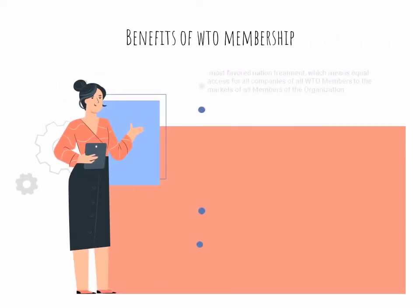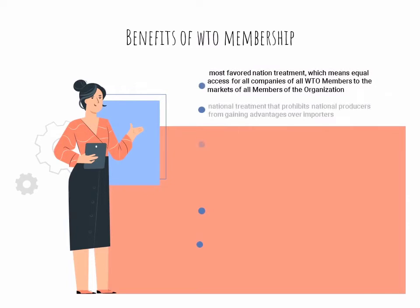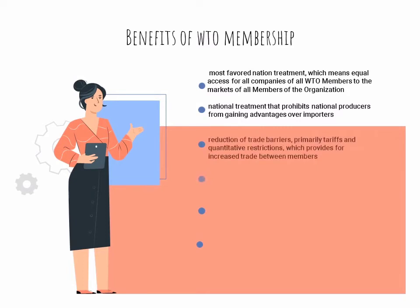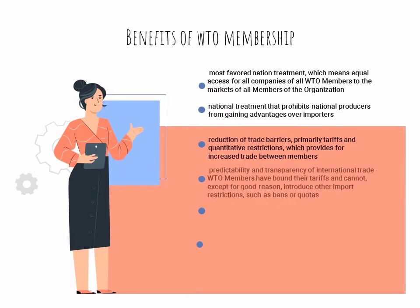Benefits of WTO membership include: Most Favored Nation treatment, which means equal access for all companies of all WTO members to the markets of all members; national treatment, which prohibits national producers from gaining advantages over importers; and reduction of trade barriers — primarily tariffs and quantitative restrictions — which provides for increased trade between members. WTO members have also agreed to bound tariffs for predictability and transparency of international trade.